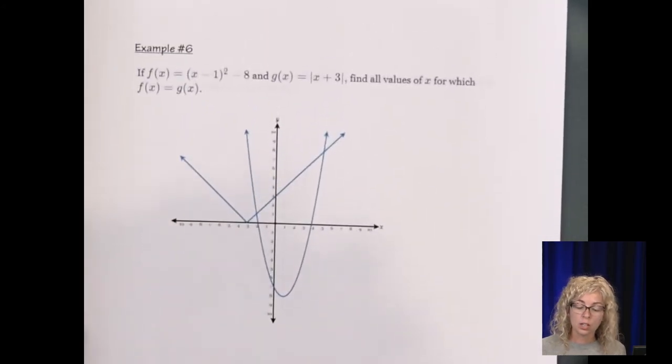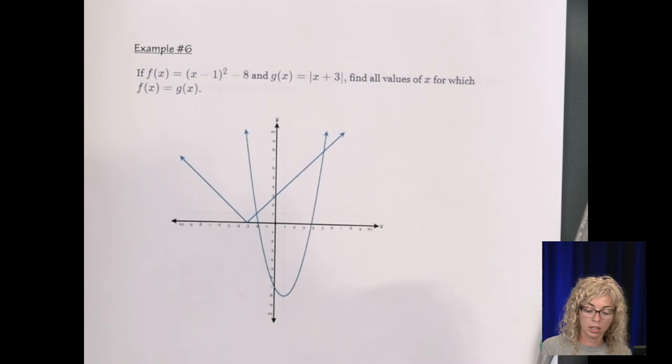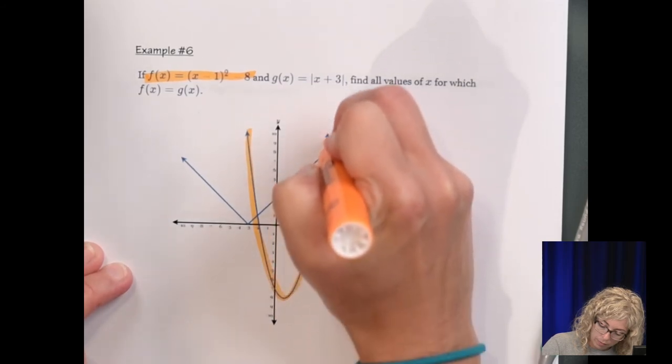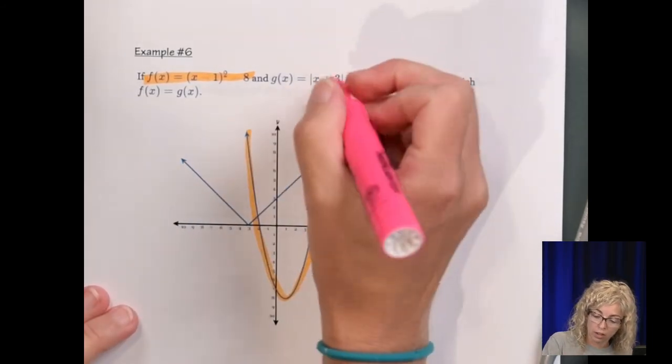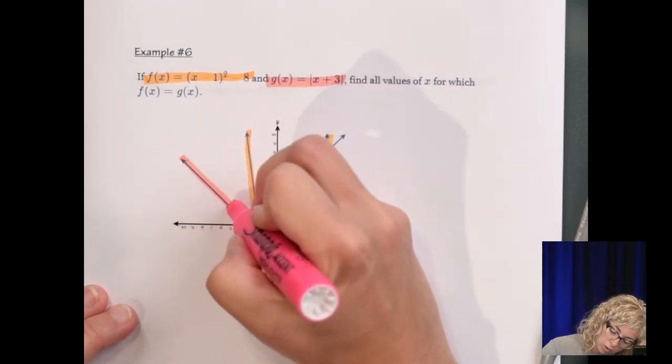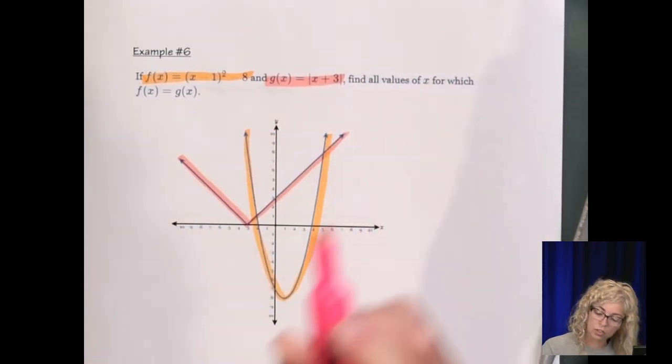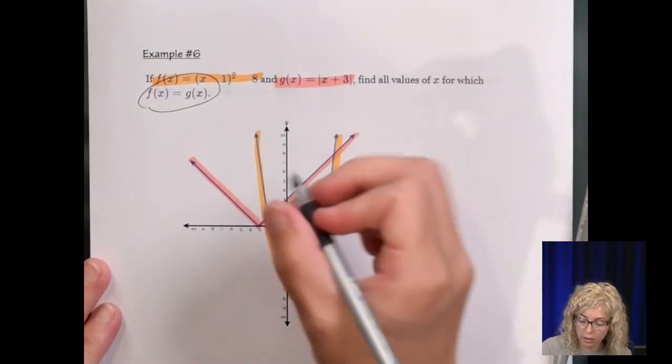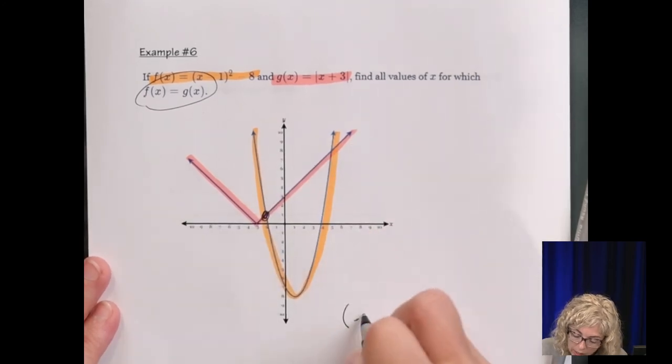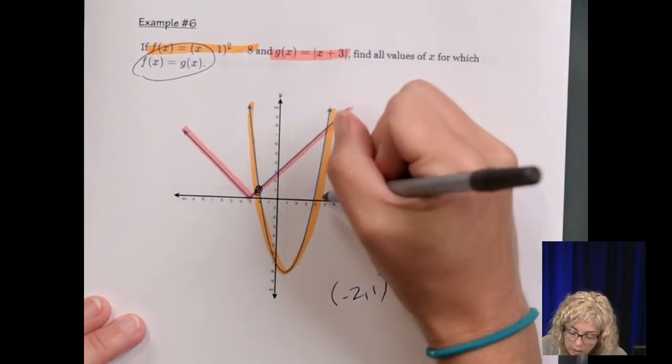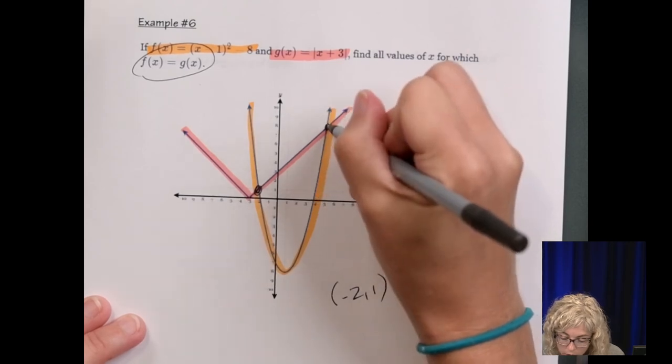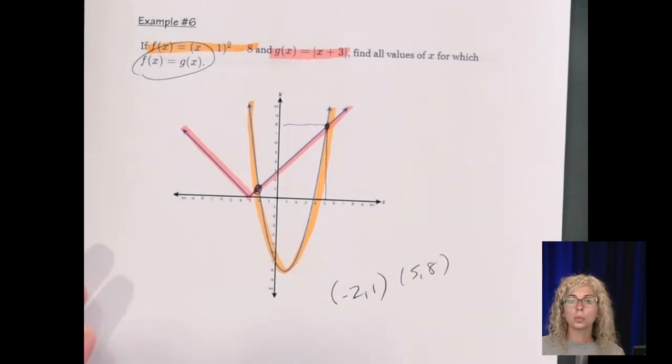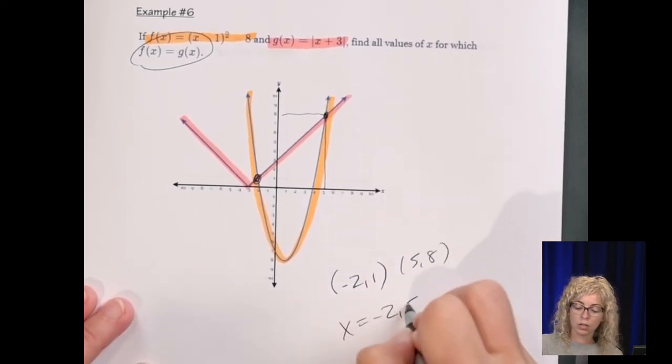Okay. Number six. So here we have two functions. Here is the quadratic. So that's the parabola. And here is the absolute value. They name it with two different letters. F of x and g of x for a different function. Find all values of x for which the functions are equal. So functions are equal where they intersect. So they intersect at negative two, one. And following this straight down, five, eight. So it just wants the value of x. So we have x equals negative two and five.